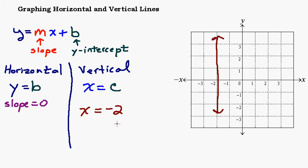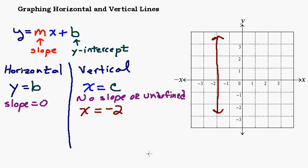There are a couple of characteristics of this vertical line that other lines don't share. This is the only line that does not have a y-intercept — it does not touch the y-axis, which makes sense since you can't put it in slope-intercept form. Also, since it can't be put in slope-intercept form, it actually doesn't have a slope — we say the slope is undefined, or no slope. Another way to verify this is to think about the slope formula: y2 minus y1 over x2 minus x1.